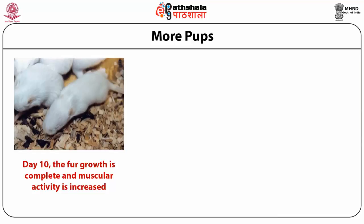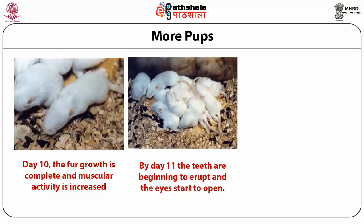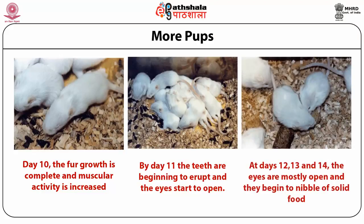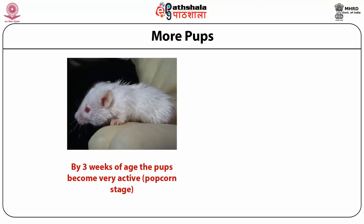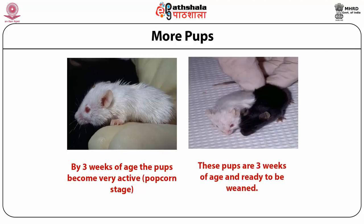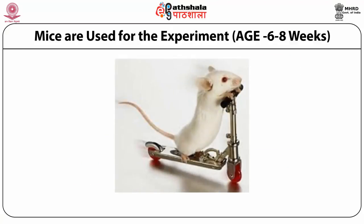Eyes start opening only on day 11, and by days 12 and 13 the eyes are fully open and the pups can eat food. By the third week the pups are very active — hairs are well developed, eyes are open, and ears are straight. At three weeks the pups are ready to wean, meaning they are separated from the mother. Experiments are mostly done on mice aged 6 to 8 weeks, when the complete adult stage is reached.